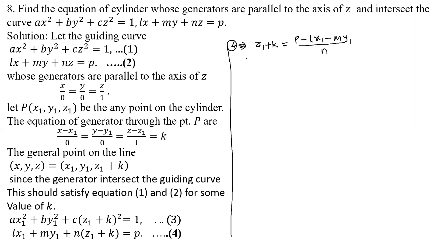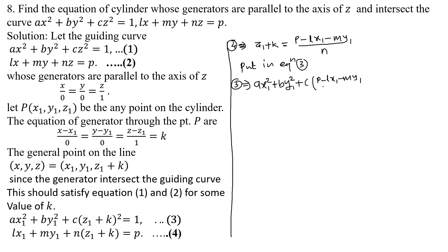Now we substitute this value into equation 3. Equation 3 can be written as: Ax₁² + By₁² + C·[(p − Lx₁ − my₁)/n]² = 1.